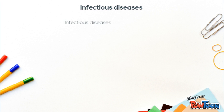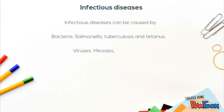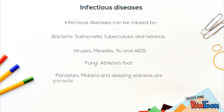Infectious diseases can be caused by bacteria — such as salmonella, tuberculosis, and tetanus; viruses — such as measles, flu, and AIDS; fungi — such as athlete's foot; and parasites — malaria and sleeping sickness are parasitic infections caused by some protozoa.